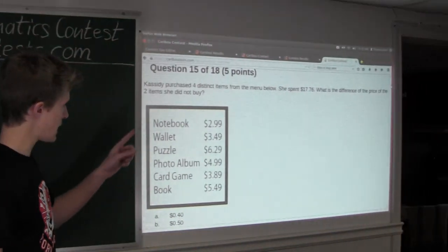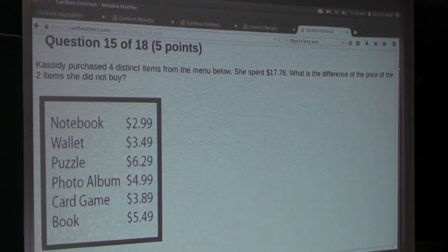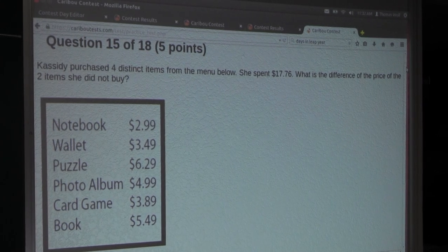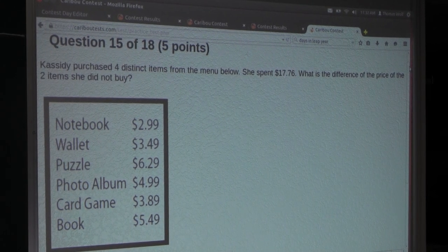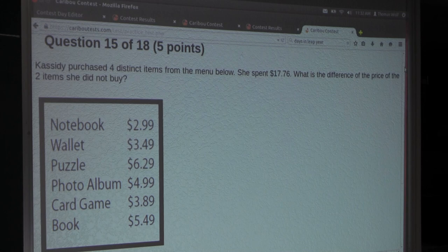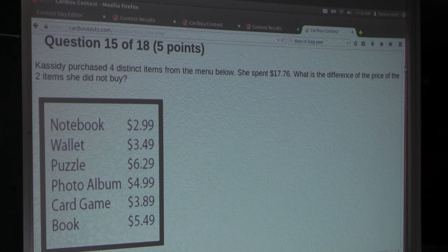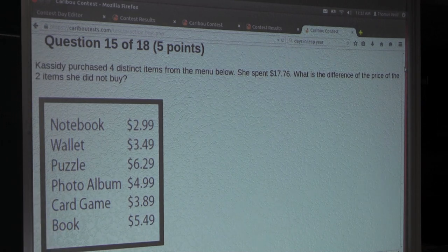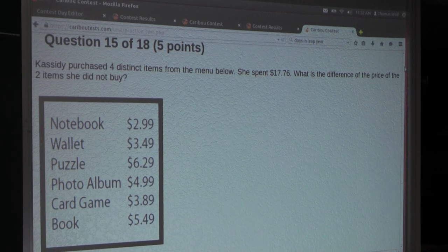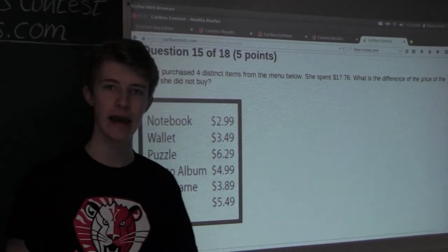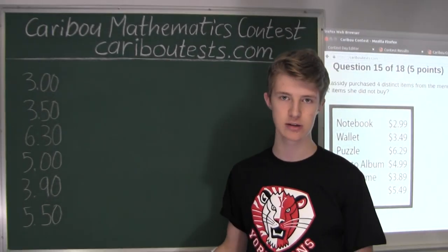Now, since she purchased four items, and each item is increased by 1 cent, that means that the total will come to 4 times 1, which is 4 cents more than what is shown. So, the total will actually come to $17.80, which also makes the total easier.